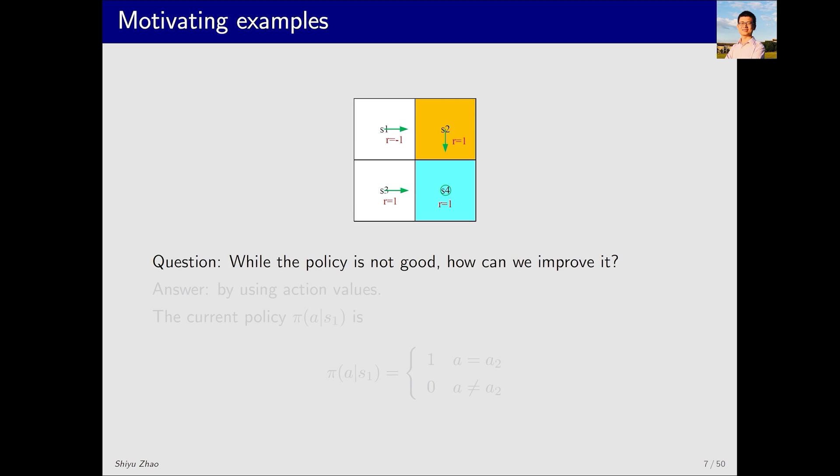Now we ask an important question. The current policy is not very good because at s1 it moves to the right, leading into the forbidden area. So, the question here is, while the policy is not good, how can we improve it to get a better one?